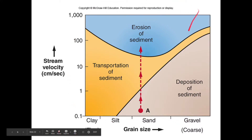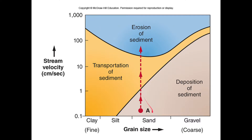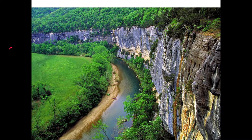We can graph this relationship between grain size and stream velocity. Remember from sedimentary rocks: clay, silt, sand, and gravel are different grain sizes. For a grain of sand at low velocity it will deposit, but increase the velocity and it starts being transported. Increase it further and it's scouring out the channel - that's erosion. For gravel, it takes a lot of velocity to get it moving, but once it's going it really beats things up.